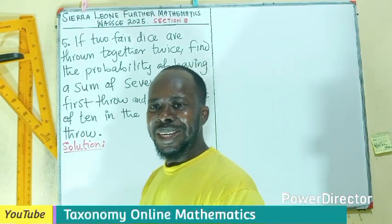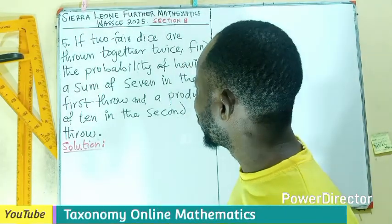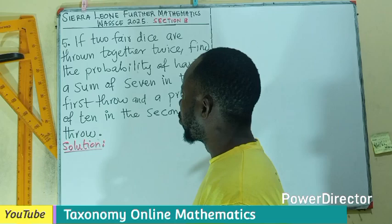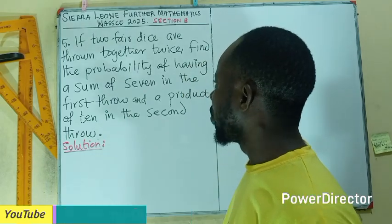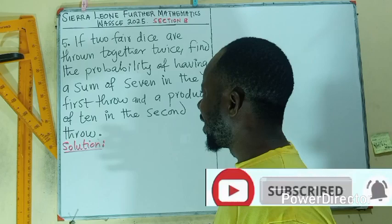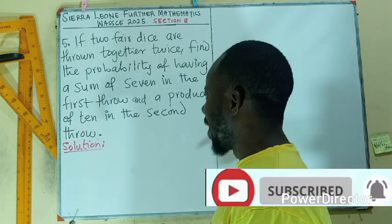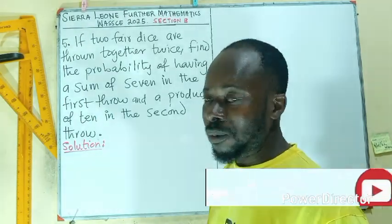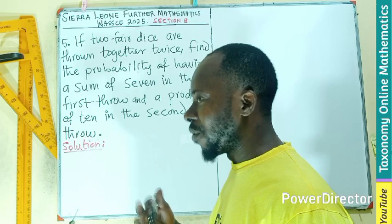Hello, welcome to question number five. If two fair dice are thrown together twice, we are finding the probability of having the sum of seven in the first throw and the product of ten in the second throw.